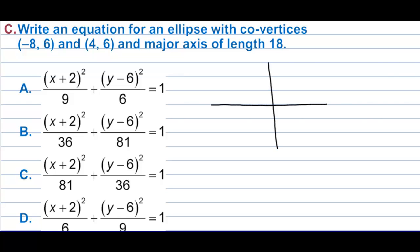Let's plot (-8,6) and (4,6). From (-8,6) to (4,6), that's a total of 12 units.